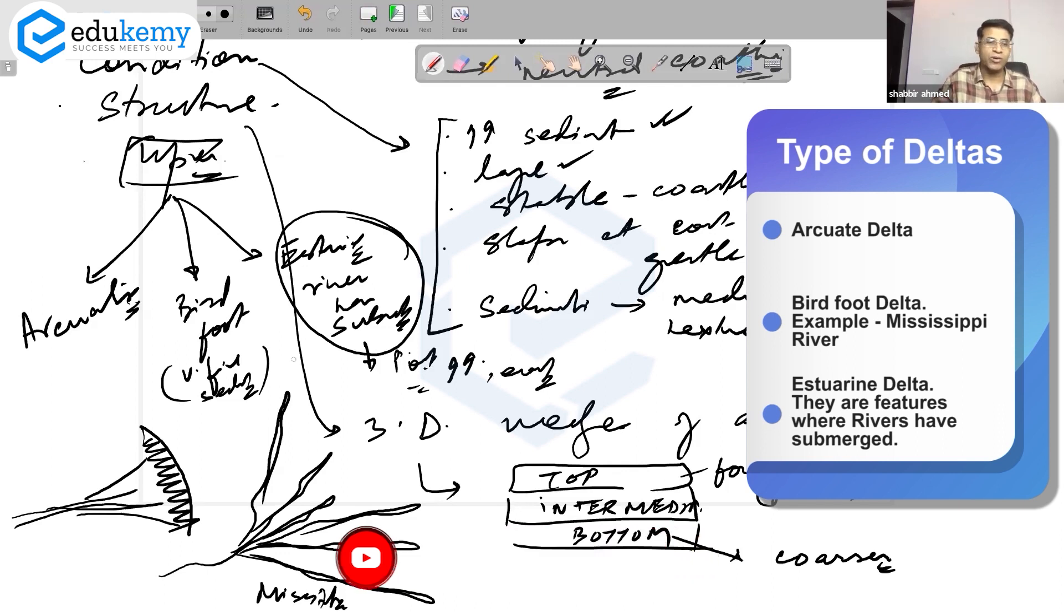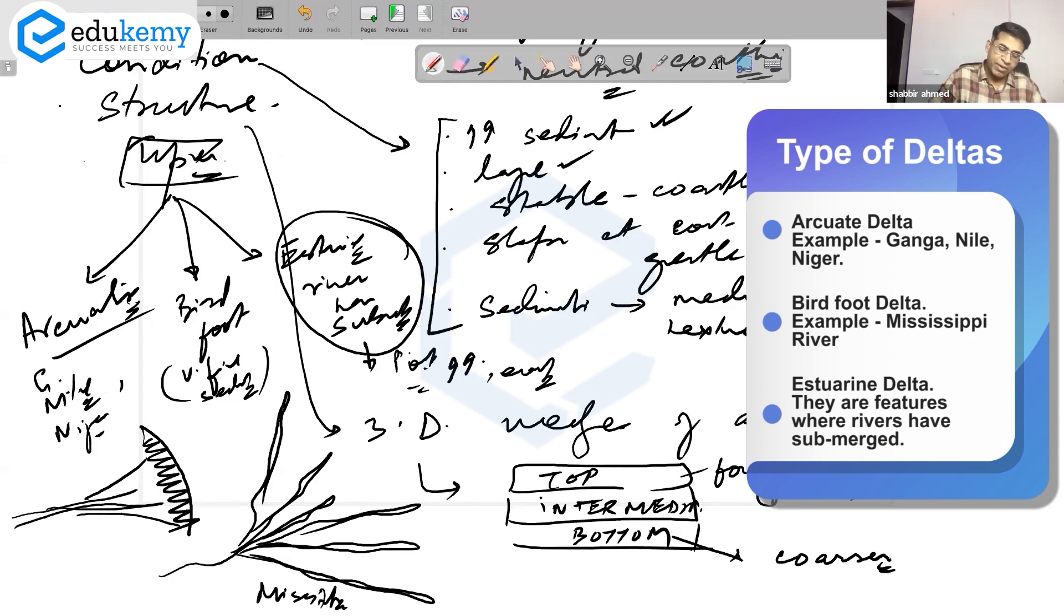Arcuate deltas are most common. Ganga is arcuate, River Nile is arcuate, River Niger - any random river you pick up is arcuate, like an arc. Bird foot delta has fingers like the feet of a bird.